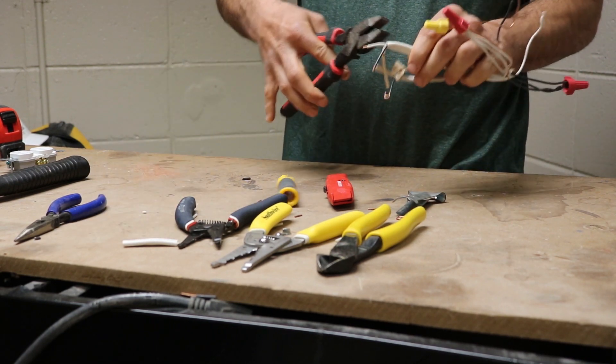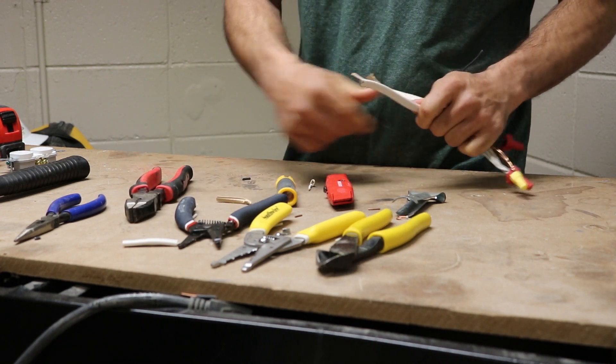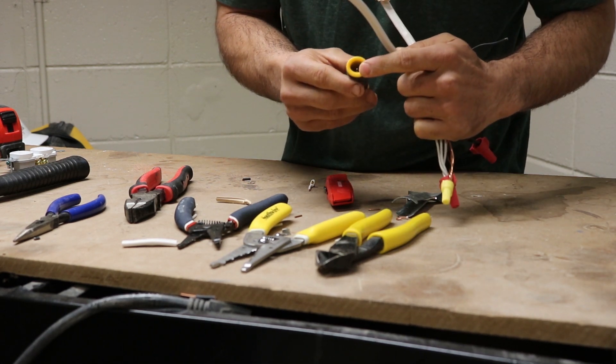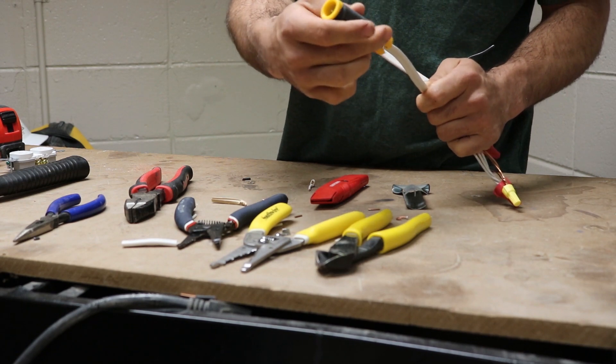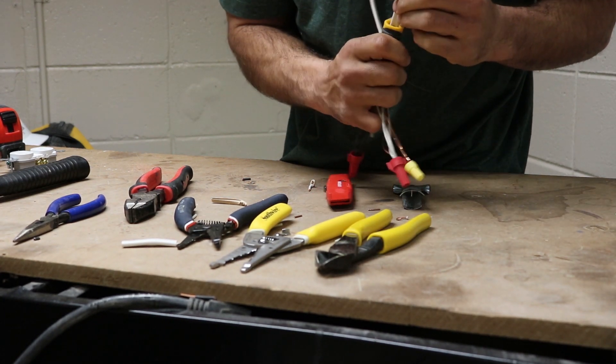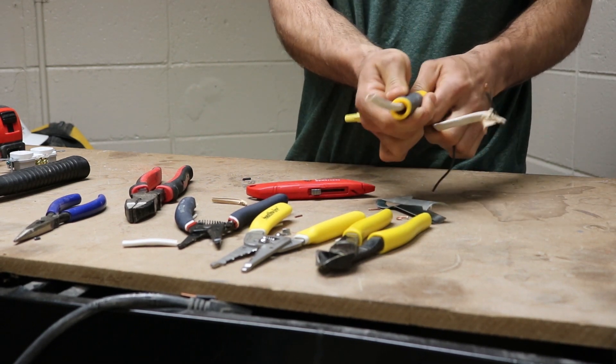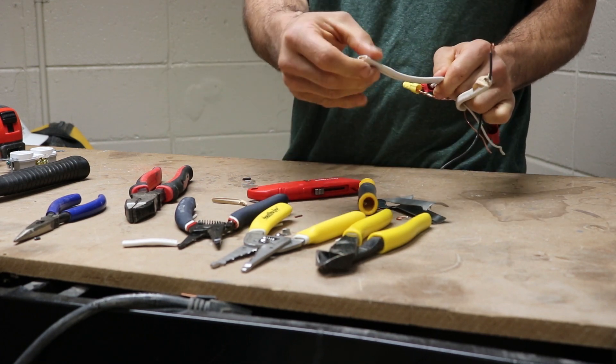Cable rippers help you take the sheathing off of wire. So if I wanted to peel the sheathing off this wire, these cable rippers have a point and these have a little cutter. I'll slide them in, and then I'll take that little point there and I'll stick it down into the sheathing. And then it will peel it right off.